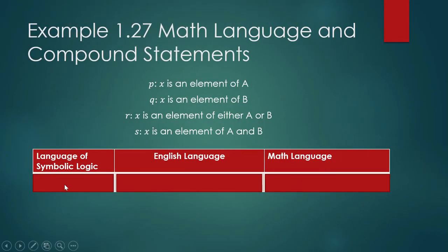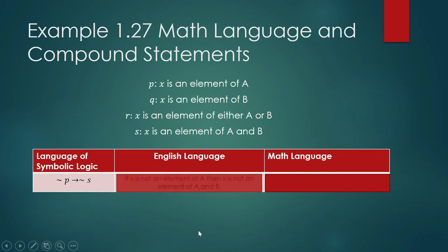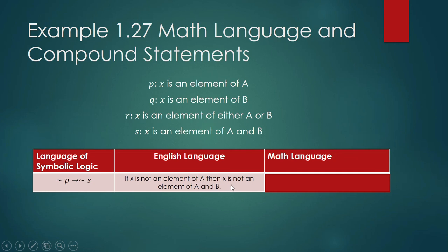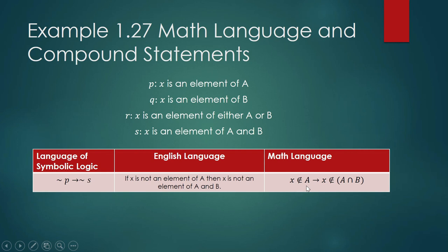Another example — a sentence in symbolic logic: 'If not p, then not s,' or 'not p implies not s.' In English: 'If x is not an element of A, then x is not an element of A and B.' In math language: 'If x ∉ A, then x ∉ A ∩ B.'